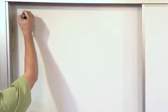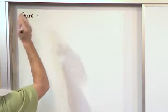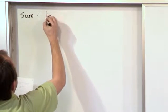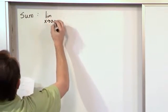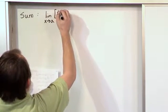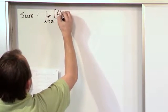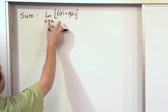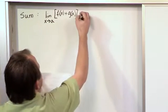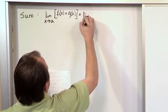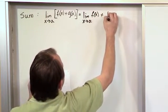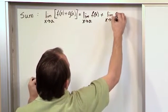So the first one is called the sum rule, and it's something that you have certainly seen before. What that means is if you have the limit as x approaches a of two functions—one of them is f(x) and the other one is g(x)—and they're added together, so you're taking the limit of the sum of two functions, that's the same thing as the limit as x approaches a of f(x) plus the limit as x approaches a of g(x).